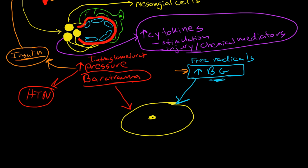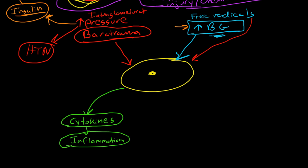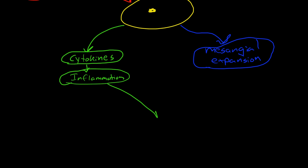So we have barotrauma or free radicals causing stress to this mesangial cell. The mesangial cell is going to react in a couple of ways. First, it's going to release cytokines and that's going to cause inflammation. Second, the cells are going to stimulate a hypertrophy of the mesangium, otherwise known as mesangial expansion. This is essentially hypertrophy of the mesangium where we have cells that are larger and greater in number.